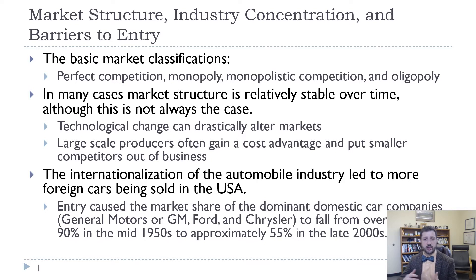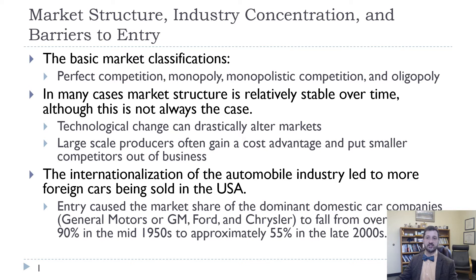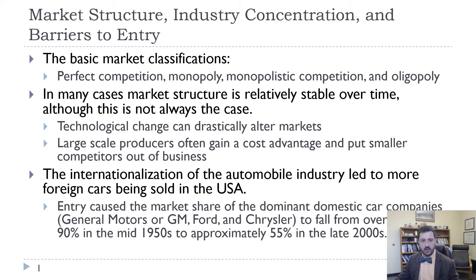One question is whether market structure is stable over time. Sometimes it is, but technological change can definitely alter markets. Sometimes as firms get bigger and bigger, they can get a cost advantage and put smaller competitors out of business — think Walmart putting out a lot of mom-and-pop shops around the country. Also, the internationalization of firms has led to both increased competition and larger firms. GM, Ford, and Chrysler had 90% of the U.S. car market in the 1950s, but that's fallen to about 55% in the late 2000s.